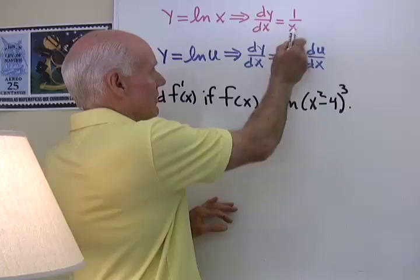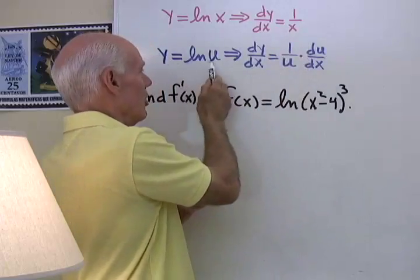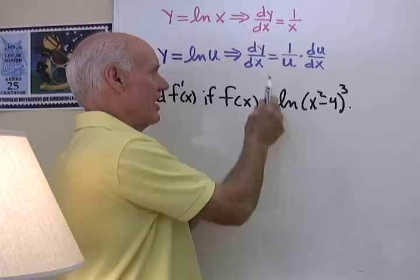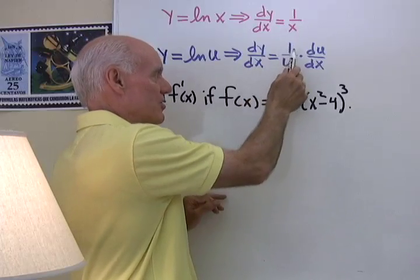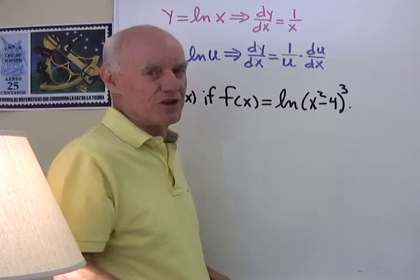So again, y equals ln x, derivative is 1 over x. y equals ln u, where u is a function of x, the derivative with respect to x is 1 over u, then you have to differentiate u itself.